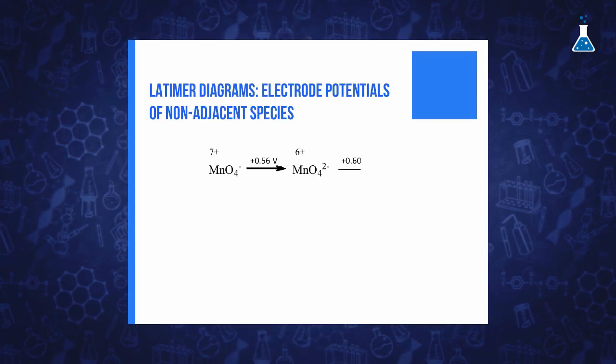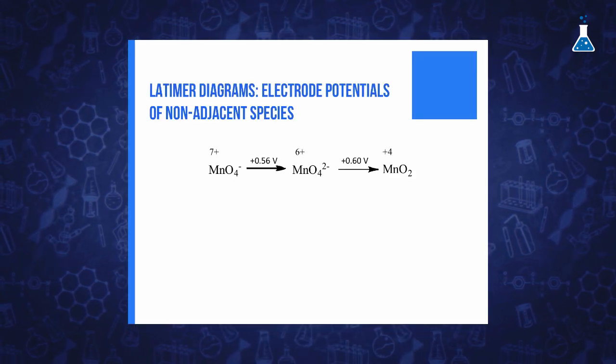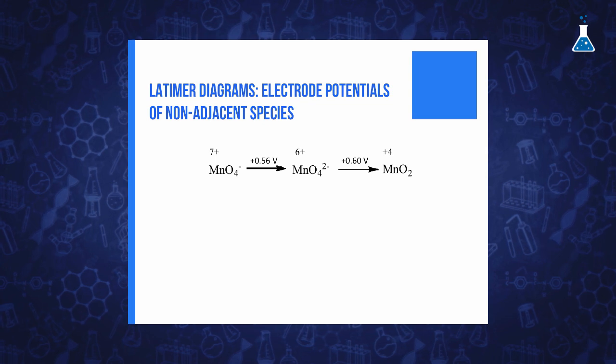For example, we can draw out the following piece of the Latimer diagram of manganese. If we need to calculate the reduction potential of manganate anion to manganese dioxide, we should do the following calculations.